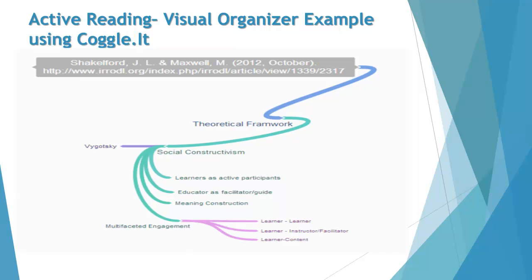The next slide is a visual organizer using a program called Coggle.it — C-O-G-G-L-E.I-T is the web address. What I did was create a brief concept map for visual organization of what I had just summarized on the previous slide. Here you can see I have 'theoretical framework' with a branch off of it, noting that the theoretical framework in this article was social constructivism, that Vygotsky was a leading author cited, and then several components of social constructivism listed, and sub-components of one of those: multifaceted engagement. This is just a way to organize what you're learning.